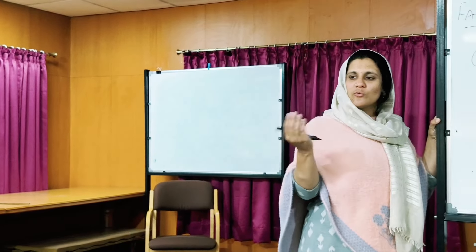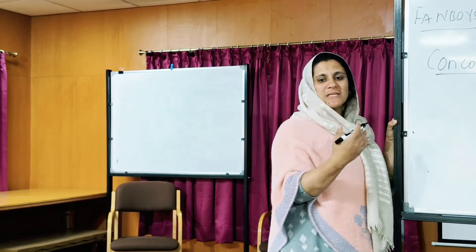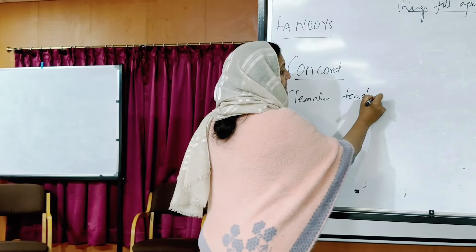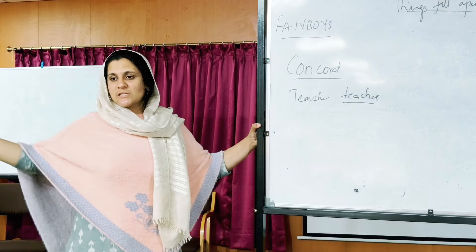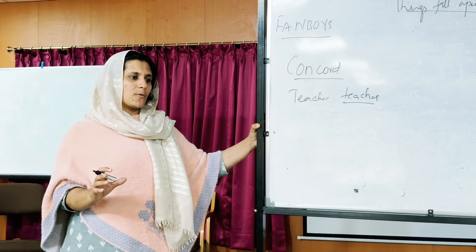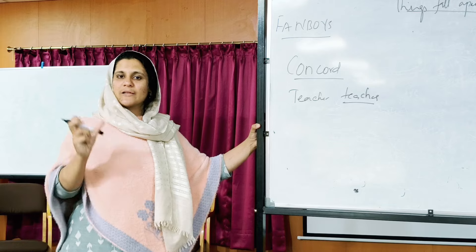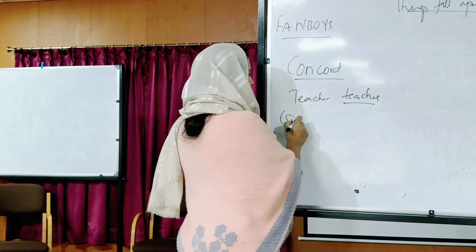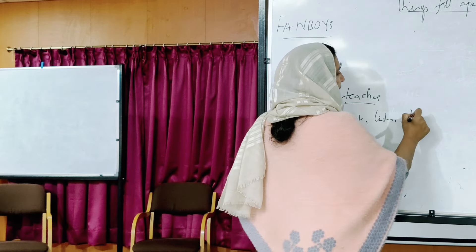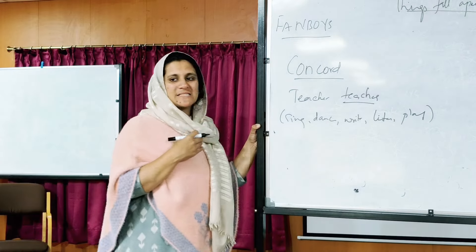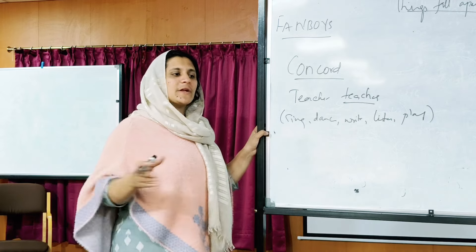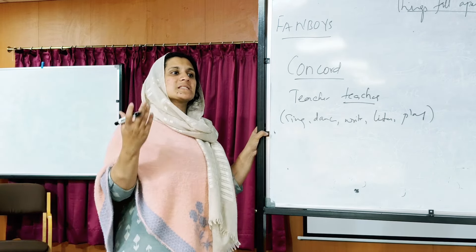How you teach concord depends on how you transact the knowledge. Don't use the old drill method of writing 'Teacher teaches' ten times — that won't work. Instead, ask students what is one thing they can do: sing, dance, write, listen, play. They select one activity. For example, 'I sing a song.' Then for Saumya: 'Saumya sings a song.' So 'I sing' versus 'Saumya sings' — this is a practical, activity-based way to introduce subject-verb agreement.